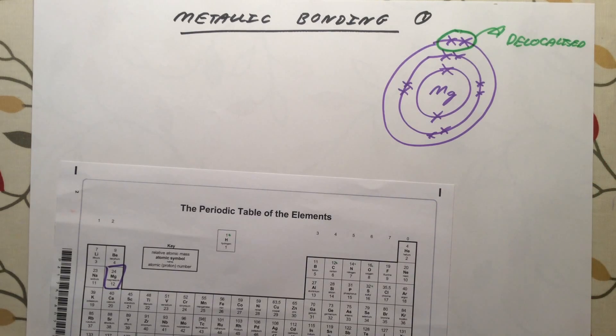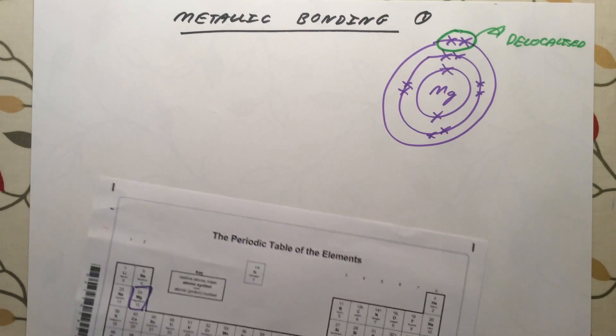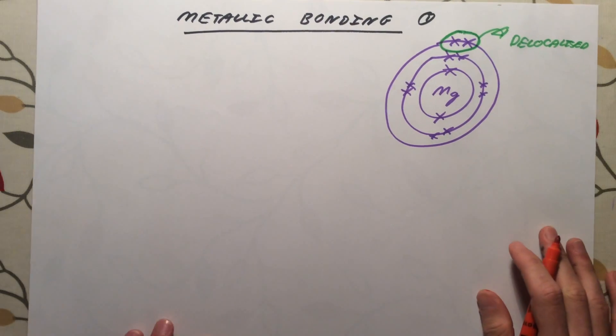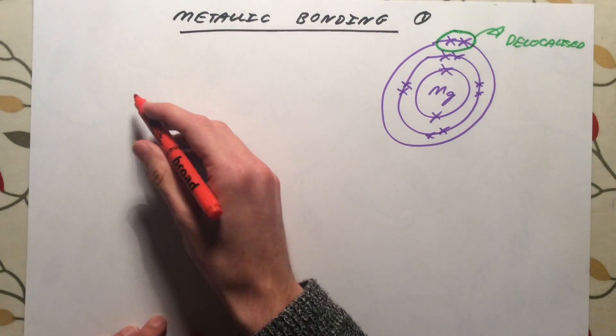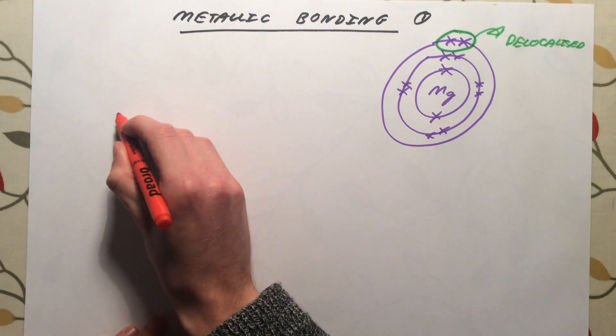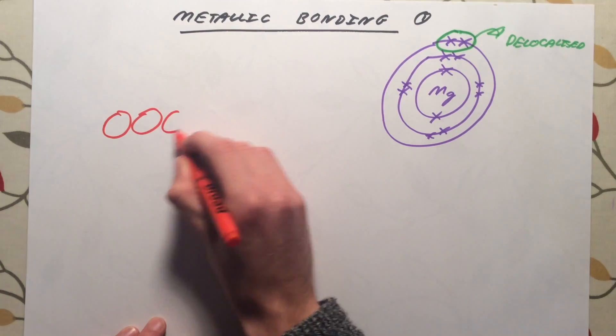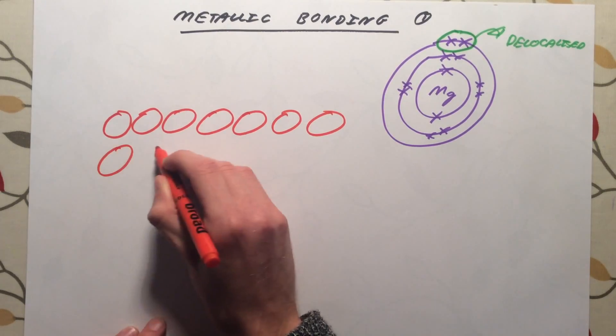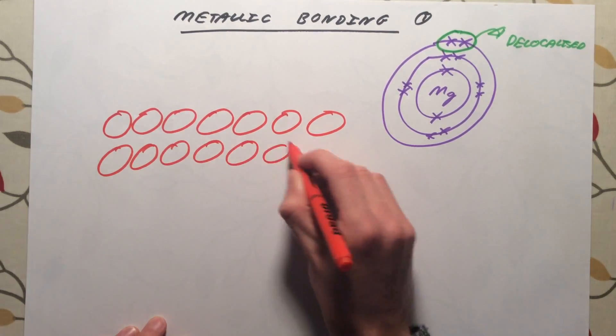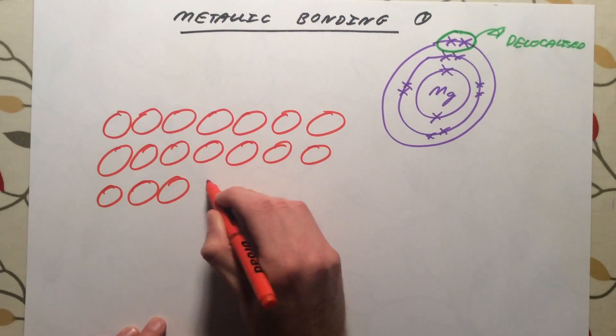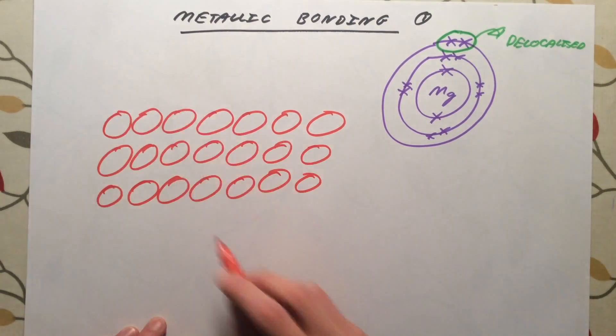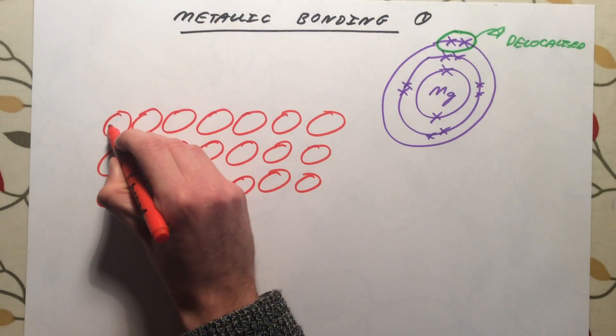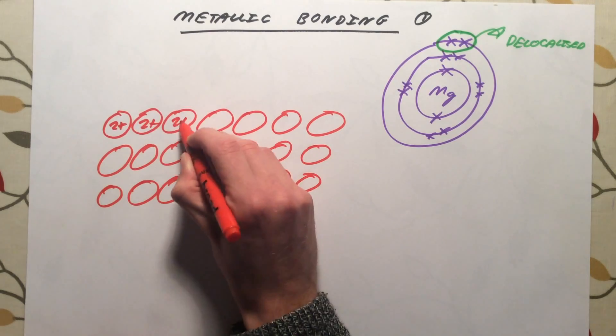So let's imagine we have an arrangement of magnesium atoms, all of which have given out two electrons. We are left with a regular arrangement, not of magnesium atoms anymore, but of magnesium ions. In this case, every magnesium atom has given out two electrons. Therefore, the ions that are remaining are all going to have a charge of 2+.